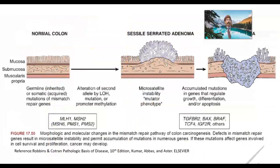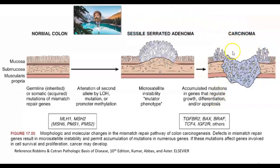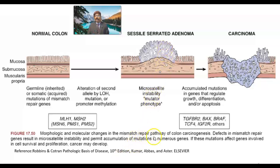Looking at colon cancer formation: normal colon, then a tubular or sessile serrated adenoma, followed by accumulated mutations in genes that regulate growth, differentiation, and apoptosis, leading to carcinoma. This illustrates the mismatch repair pathway of colon carcinogenesis.